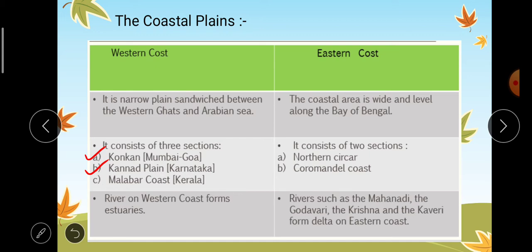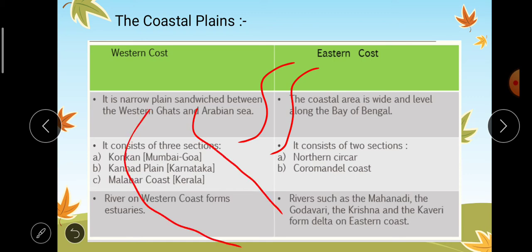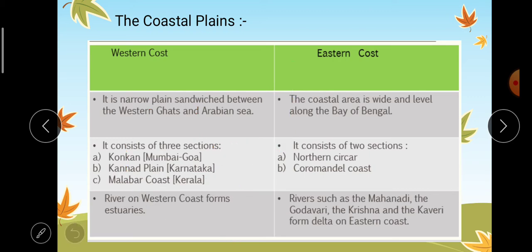Rivers on the western coast form estuaries — they fall directly into the ocean. Rivers such as the Narmada and the Tapi form estuaries. On the eastern coast, rivers such as the Mahanadi, the Godavari, the Krishna, and the Kaveri form deltas before falling into the Bay of Bengal.